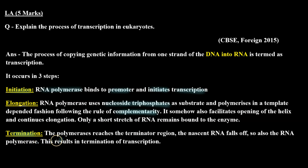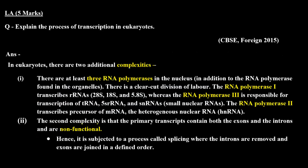This is the basic process of transcription, which is common to both prokaryotes and eukaryotes. But in eukaryotes there are additional complexities compared to prokaryotes. In prokaryotes there is one RNA polymerase, but in eukaryotes there are three RNA polymerases present.